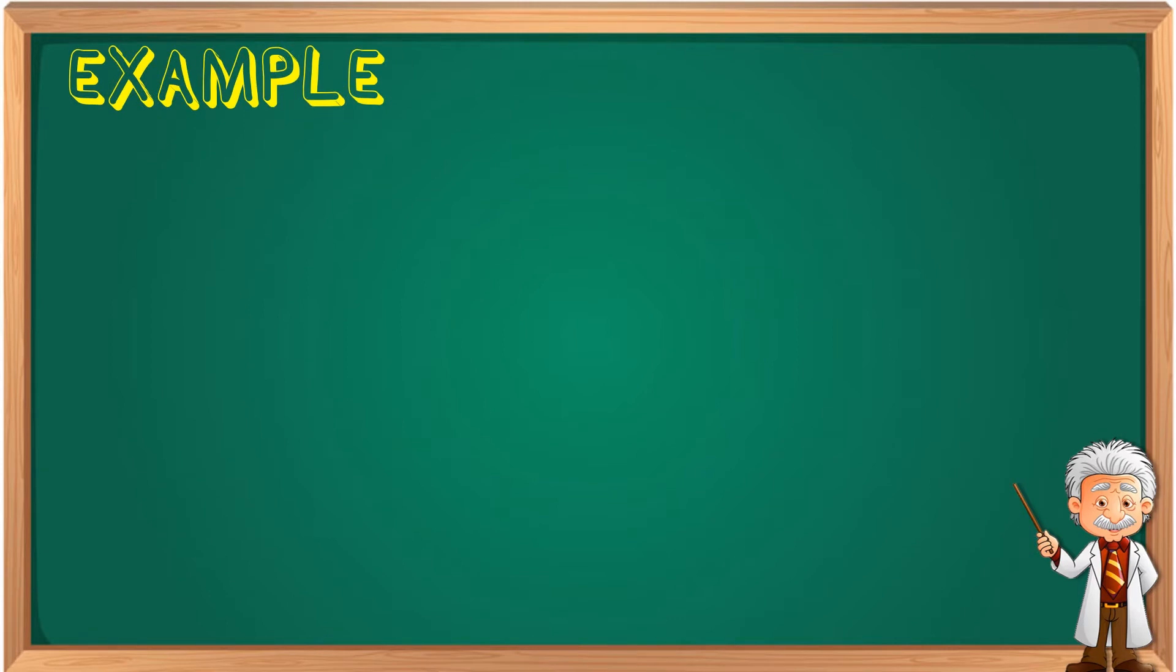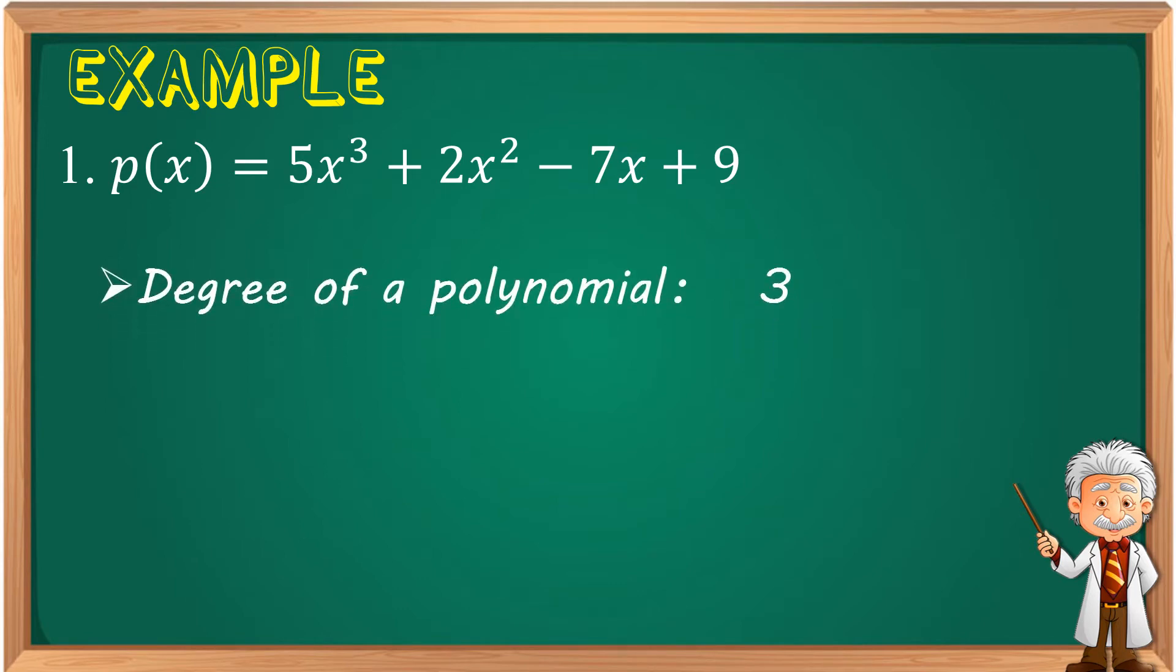Let's have an example. P(x) = 5x³ + 2x² - 7x + 9. The degree of a polynomial is 3 because it is the highest exponent that is found in the first term. It can also be found in the following terms or in the last term. So, it doesn't matter where the term is. What matters is, it's the highest exponent.